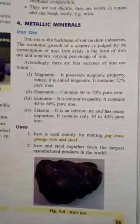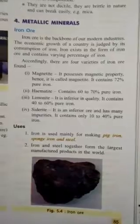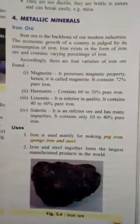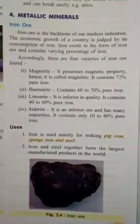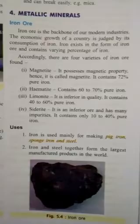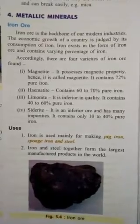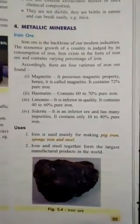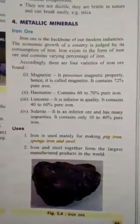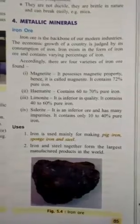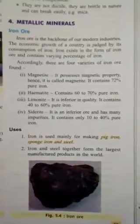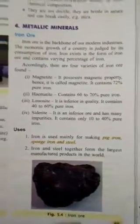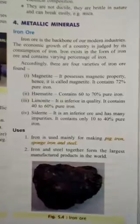The third variety is Limonite. It is of inferior quality — thoda kam quality ka hota hai. It contains 40 to 60% pure iron.